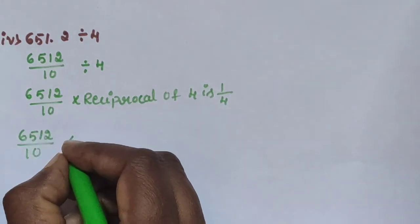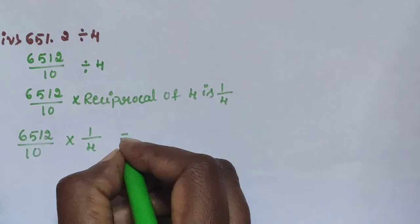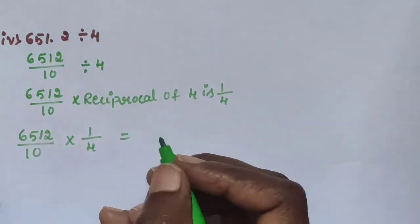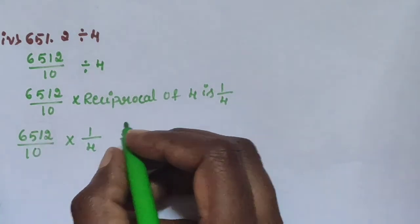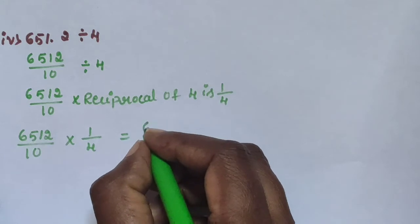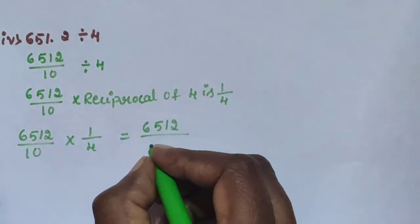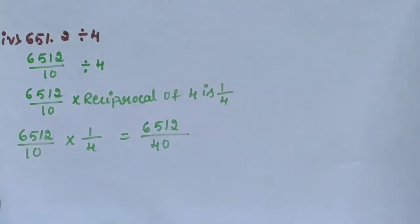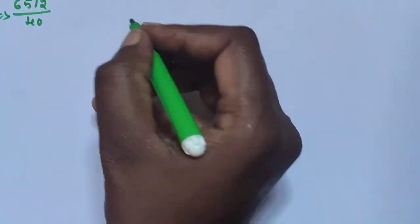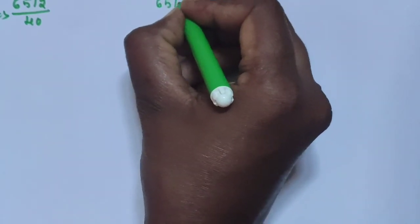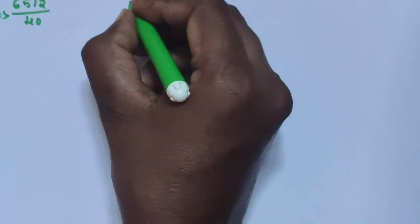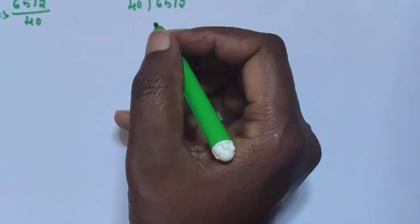So 6512 divided by 10 into 1 by 4. Multiply: 6512 into 1 equals 6512, and 10 into 4 equals 40. So we have 6512 divided by 40.